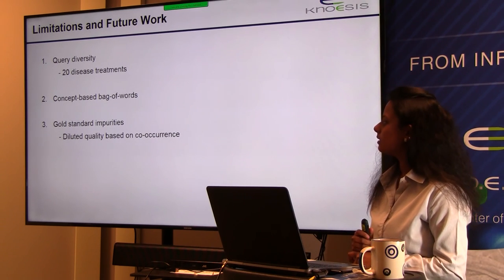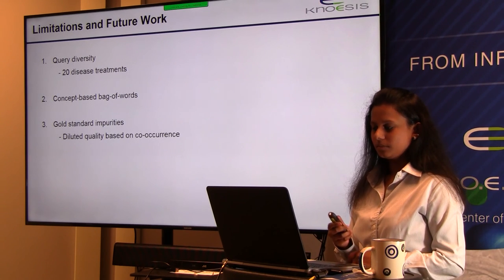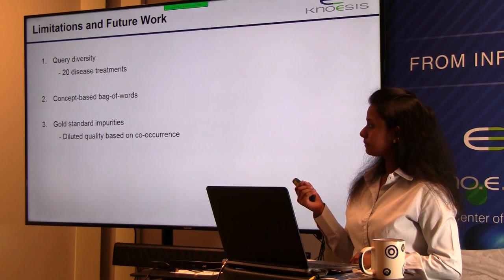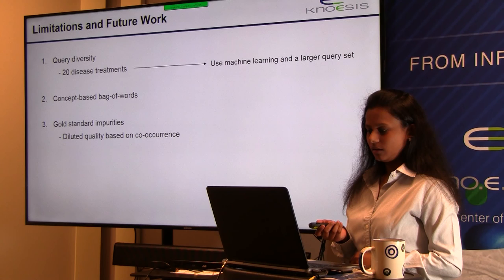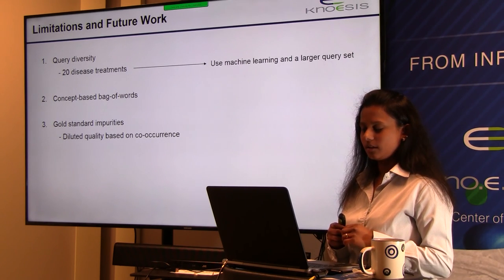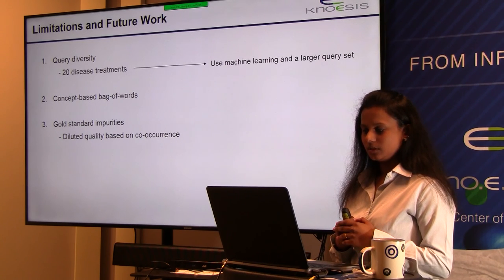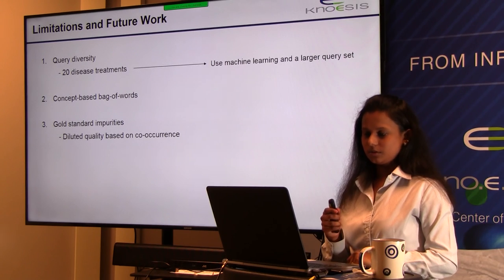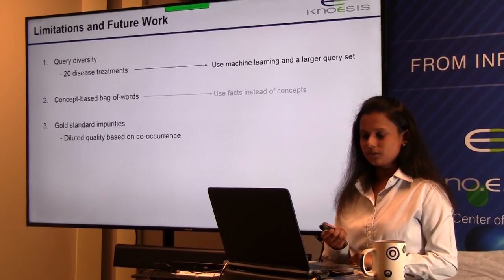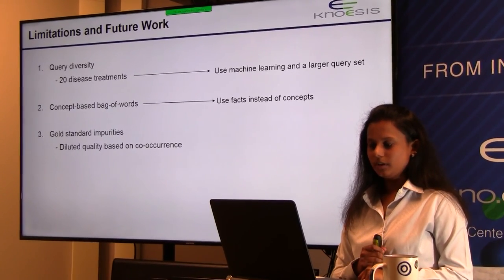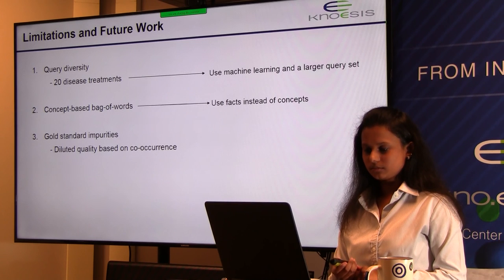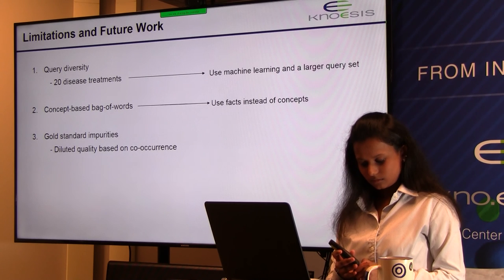Three limitations are identified. First, query diversity: the study was conducted across only 20 diseases, and using a more diverse set of predication types would allow more controlled conclusions. Second, the concept-based bag-of-words model: using a predication-based or fact-based bag-of-words model would be more informative — a committee member noted that using sentence-level context (the specific sentence in which a concept occurs) rather than the entire abstract would provide more specificity. Third, gold standard creation: using a semi-automatic approach with domain experts from NLM was a reasonable starting point, but including more domain experts from outside the institution or considering more resources beyond the three used would improve the gold standard.